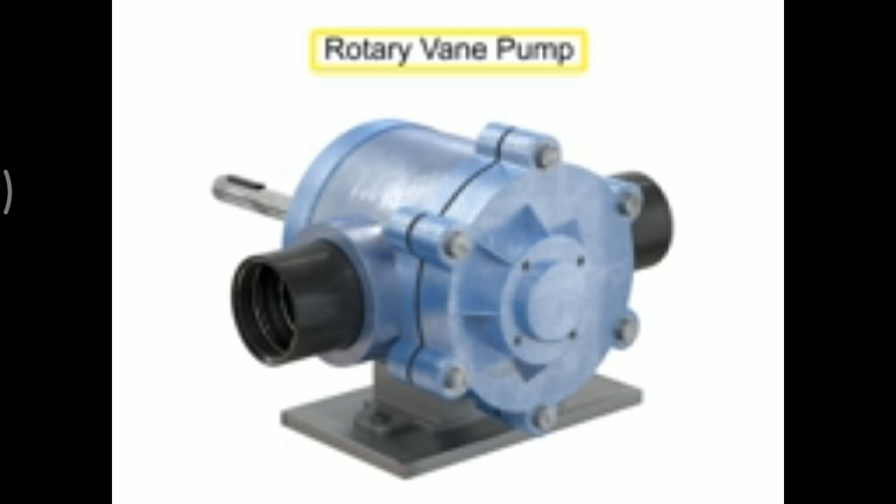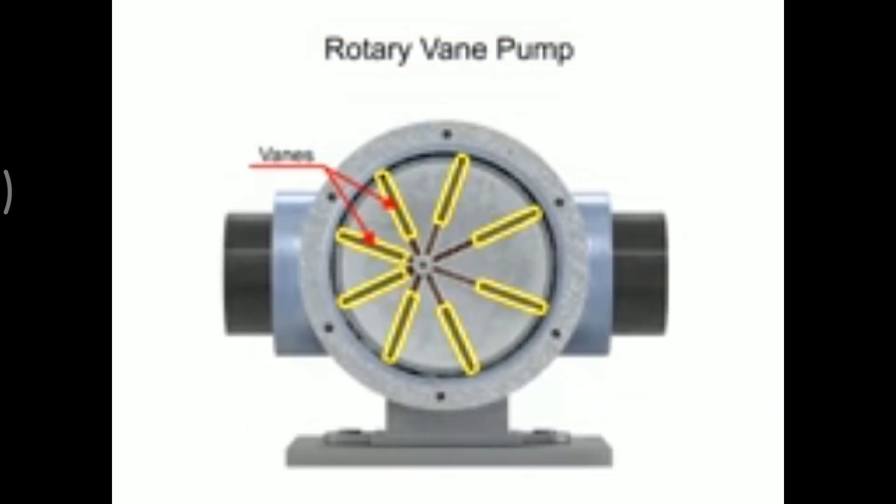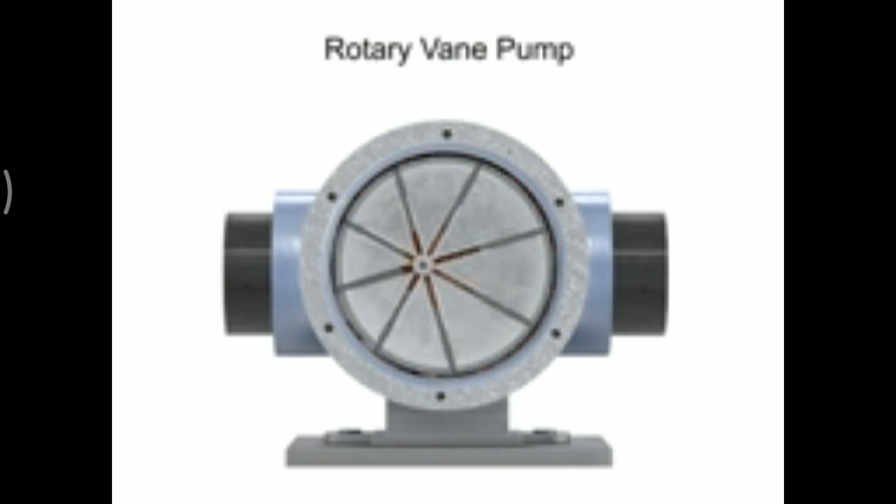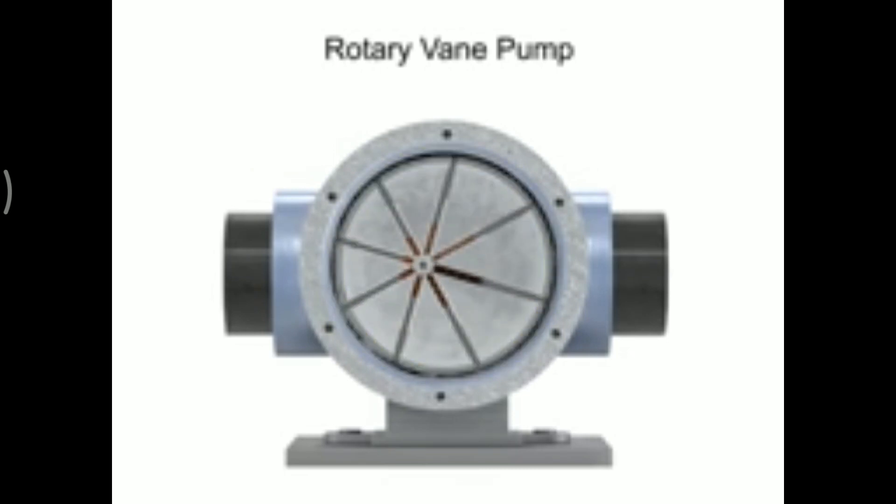A rotary vane pump is a positive displacement pump that consists of vanes mounted to a rotor. The vanes are on an off-center drive shaft. As the shaft rotates, the variable length vanes slide in and out to maintain contact with the pump housing. The tension in the vanes is maintained by either springs or hydraulic pressure.